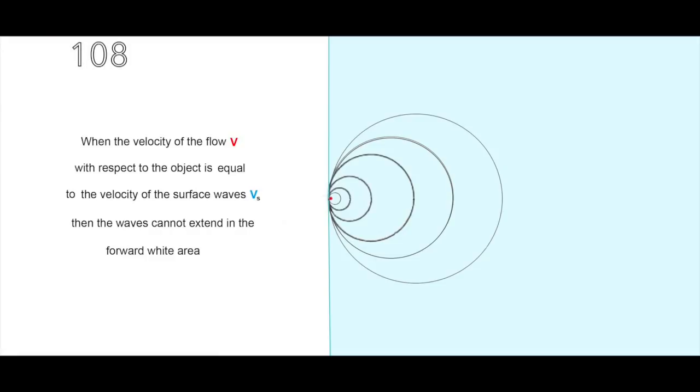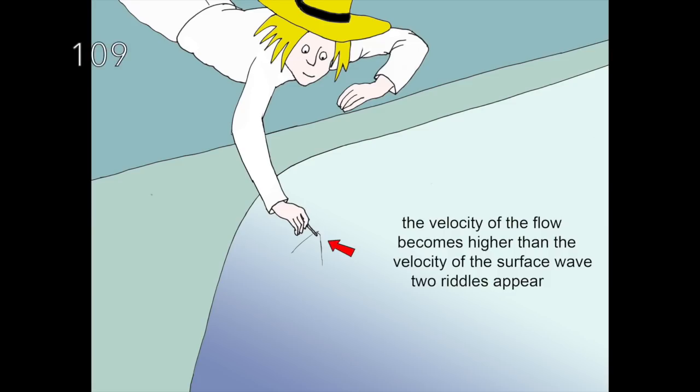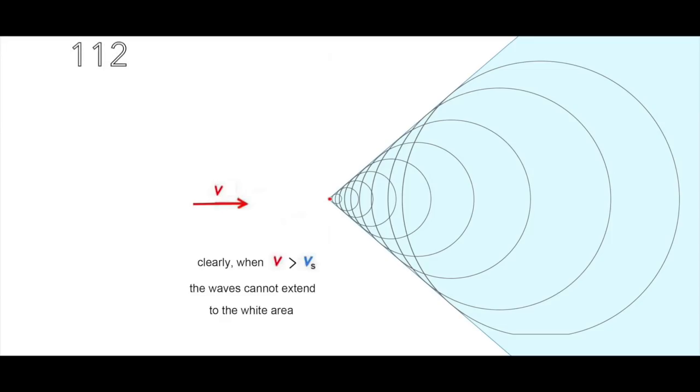Next image, in this portion of the flow, the velocity becomes higher than the propagation velocity of the surface waves. We get two riddles. This is the analogy of a supersonic flight. See the corresponding pattern showing the wave propagation schema.